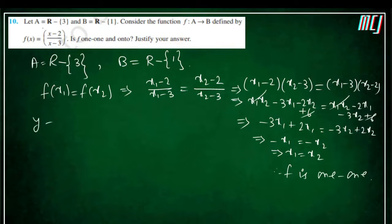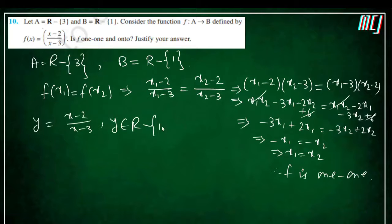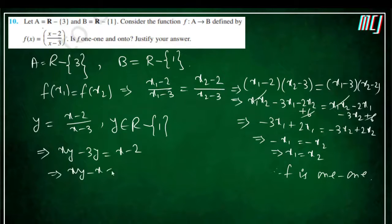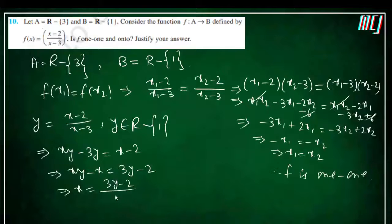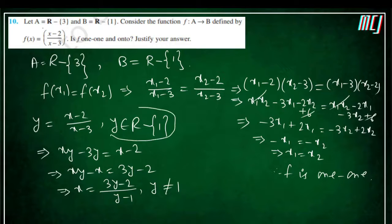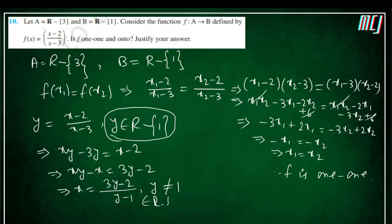Now we check onto. Take y = (x−2)/(x−3), where y belongs to R − {1}. Solving for x: xy − 3y = x − 2, so xy − x = 3y − 2, giving x = (3y−2)/(y−1), with condition y ≠ 1. Since y belongs to R − {1}, y is never 1, so we always get a real preimage. Therefore f is onto as well.